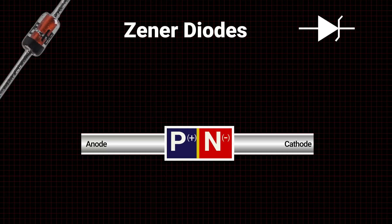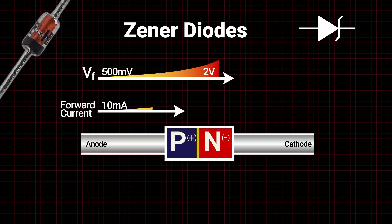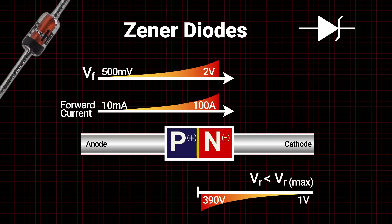Zener diodes are designed to break down, thus allowing current to flow in either direction. The catch is that they will only break down to allow reverse current flow at a specified voltage, as long as temperature ratings are not exceeded. They are commonly used in applications such as voltage regulation, surge suppression, clipper circuits, and more.